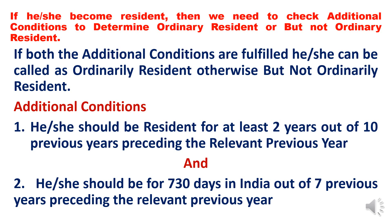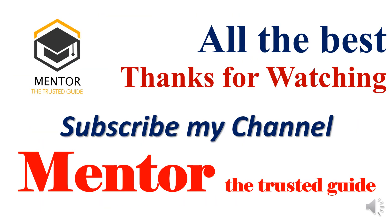The second additional condition is: he or she should be in India for 730 days out of the 7 previous years preceding the relevant previous year. These are the two additional conditions. If both are satisfied, the individual is called 'ordinarily resident'; otherwise, they are called 'not ordinarily resident'. I hope I have made you understand the entire concept of residential status. I will make videos based on problems going forward. Thanks for watching, and do subscribe to my channel Mentor — The Trusted Guide.